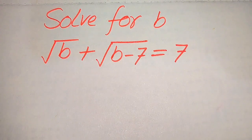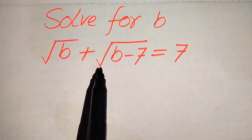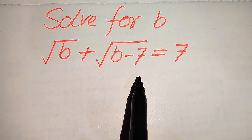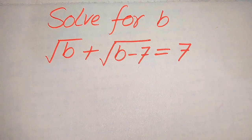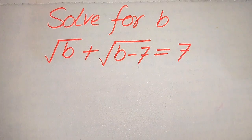Hello everyone. How to solve this problem for the values of b: if we have square root of b plus square root of b minus 7 equals 7, and we solve this problem for all the values of b. First we find all the roots of this equation, and at the last we will verify which of the roots are solutions and which of the roots are extraneous roots.